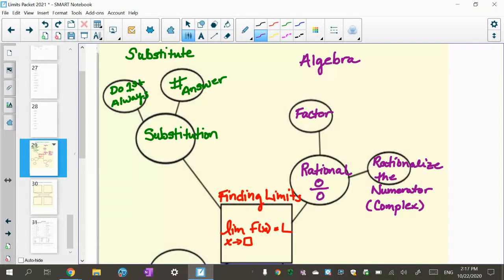So I start substituting first, and I always do that. And then I go to try to do algebra. So if I get this indeterminate form of 0 over 0, I try factoring and then rationalize.